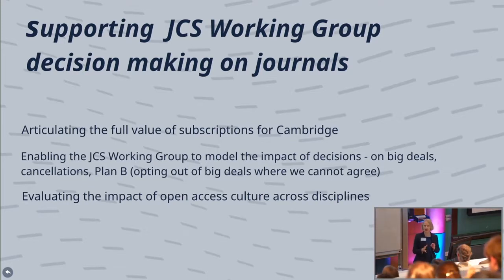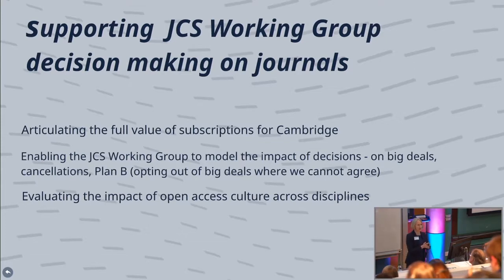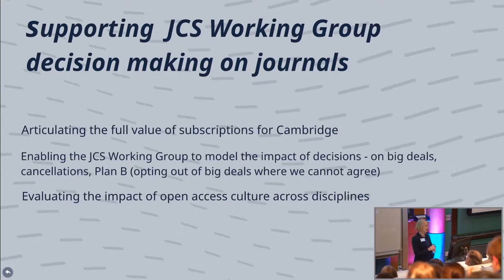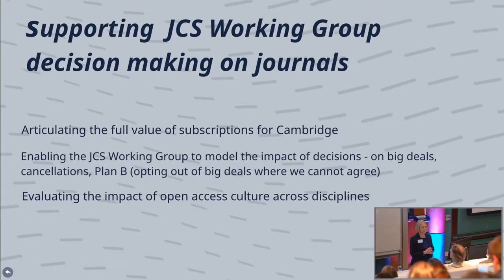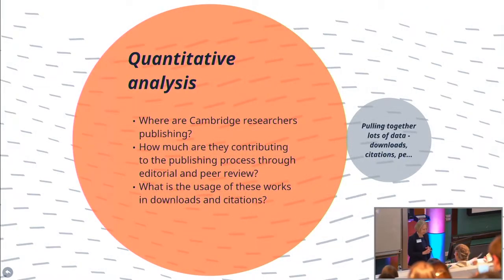The working group doesn't take decisions on big deals — that is for the JCS steering group in conjunction with the university librarian — but it's a chance to have a bigger conversation. When we started to think about a plan B, what we would do if we didn't feel we could sign up to a national journal agreement, or if there was no way nationally of reaching agreement with publishers, we could walk away as the German academic community has done. But we actually don't know much about the potential impact of that, and that is one of the things we want to address in this project.